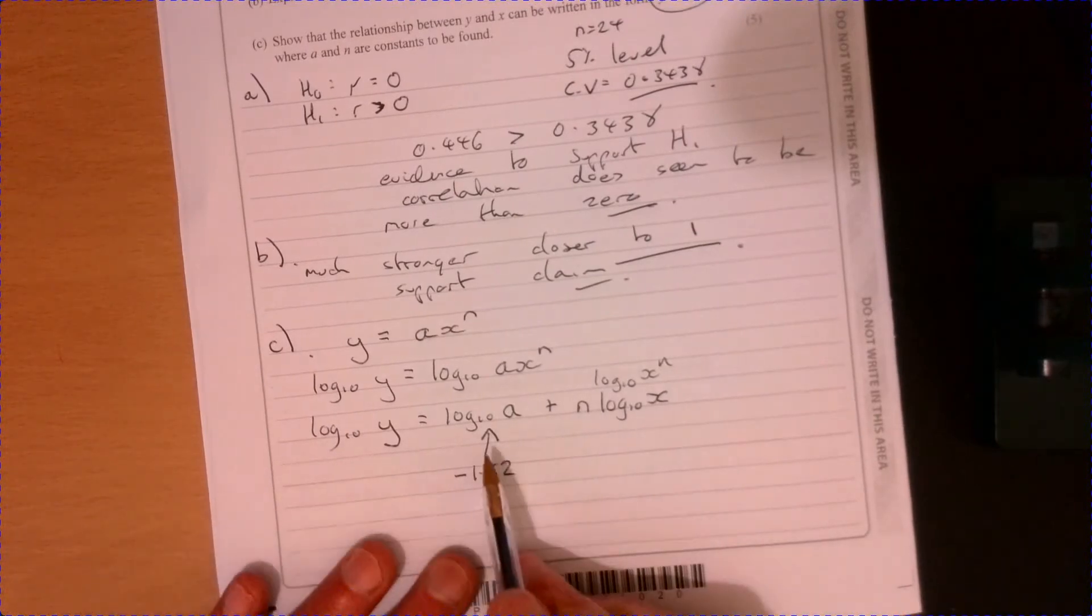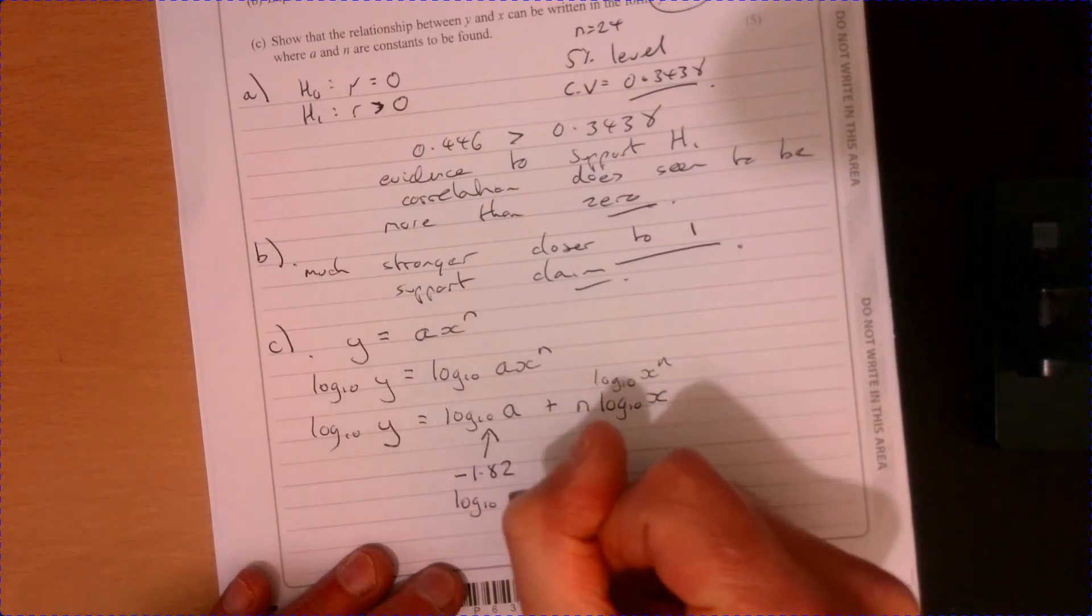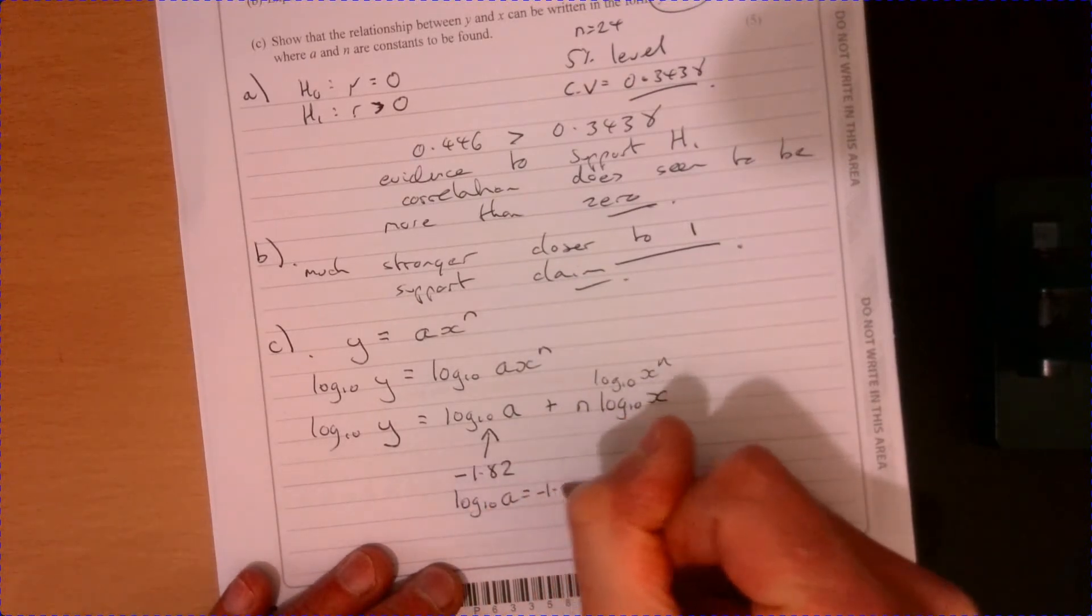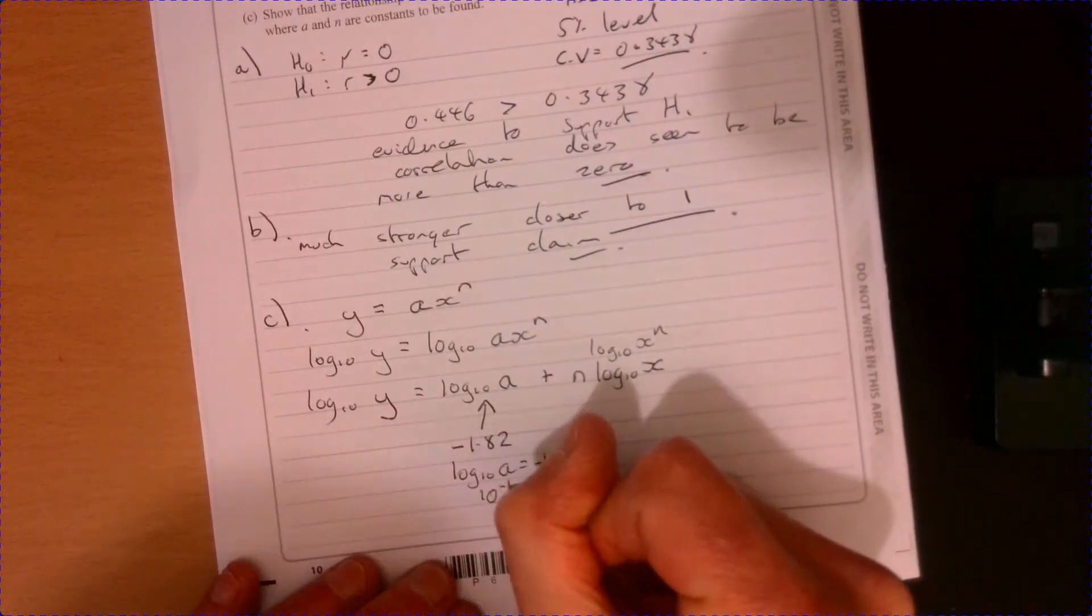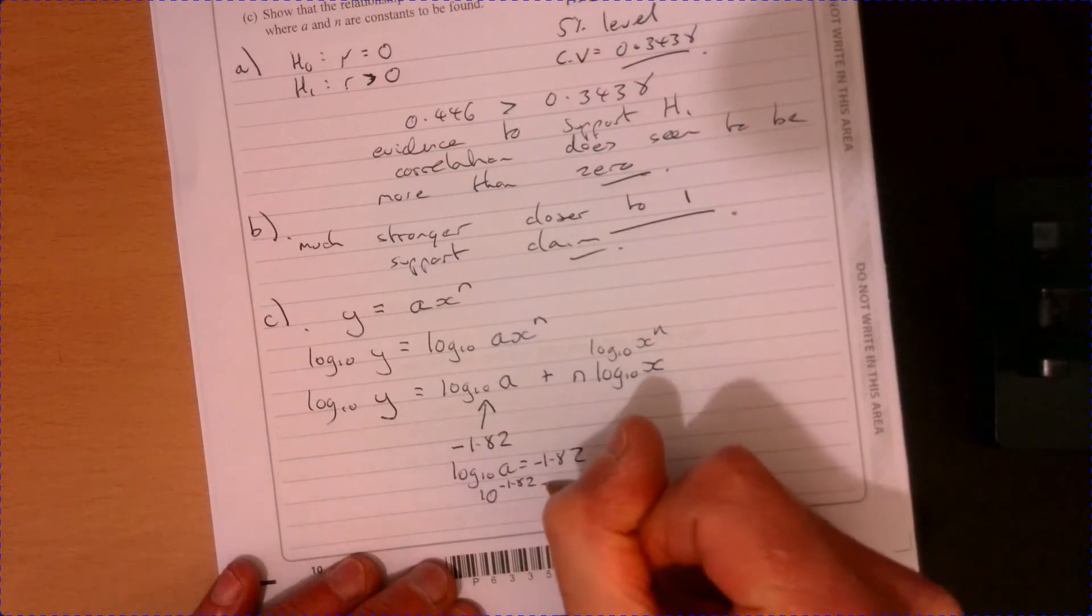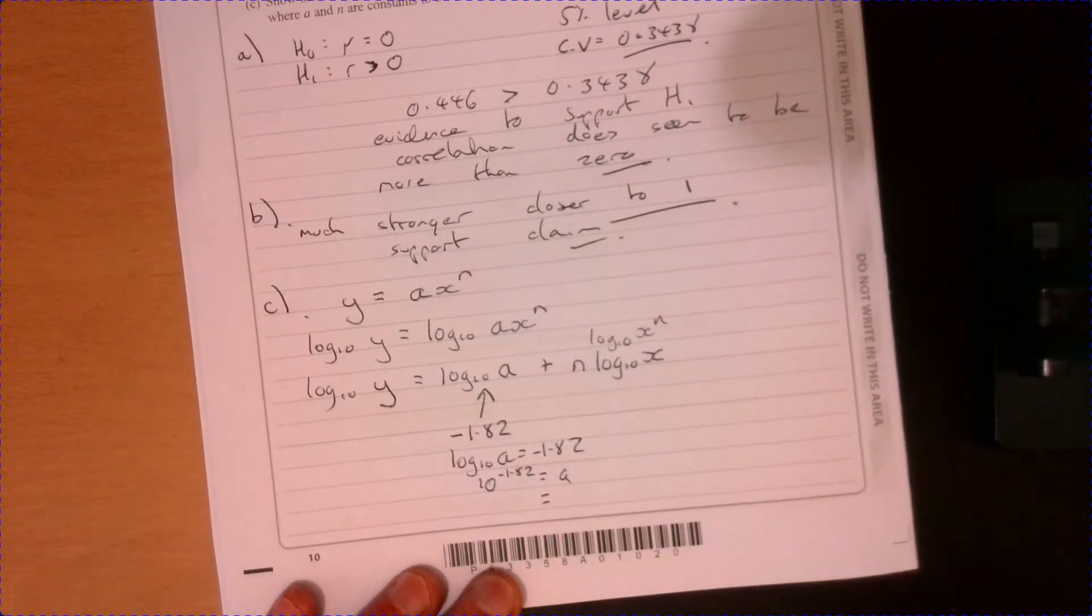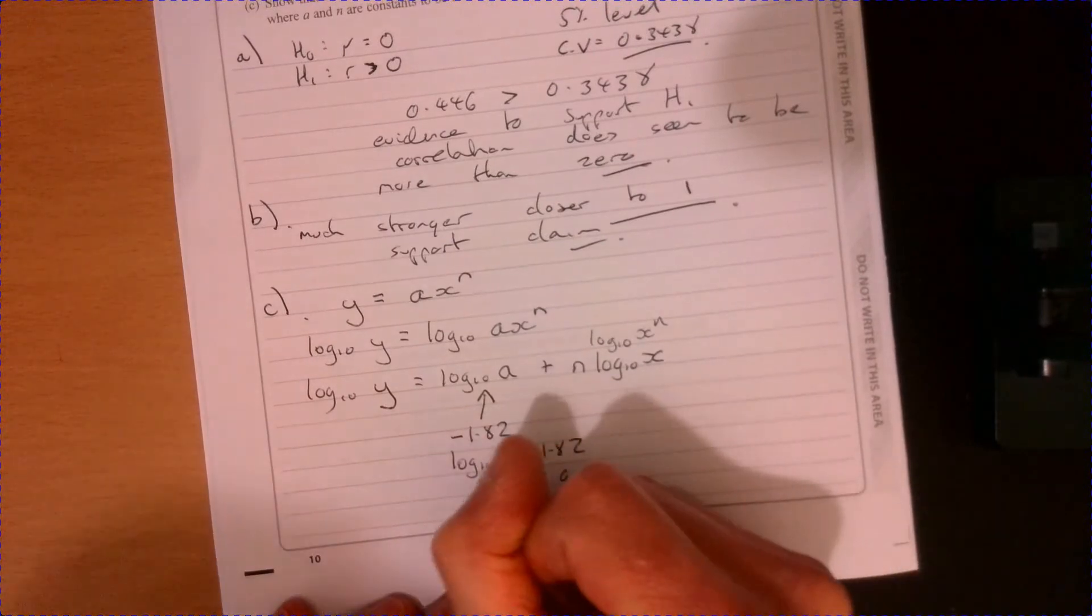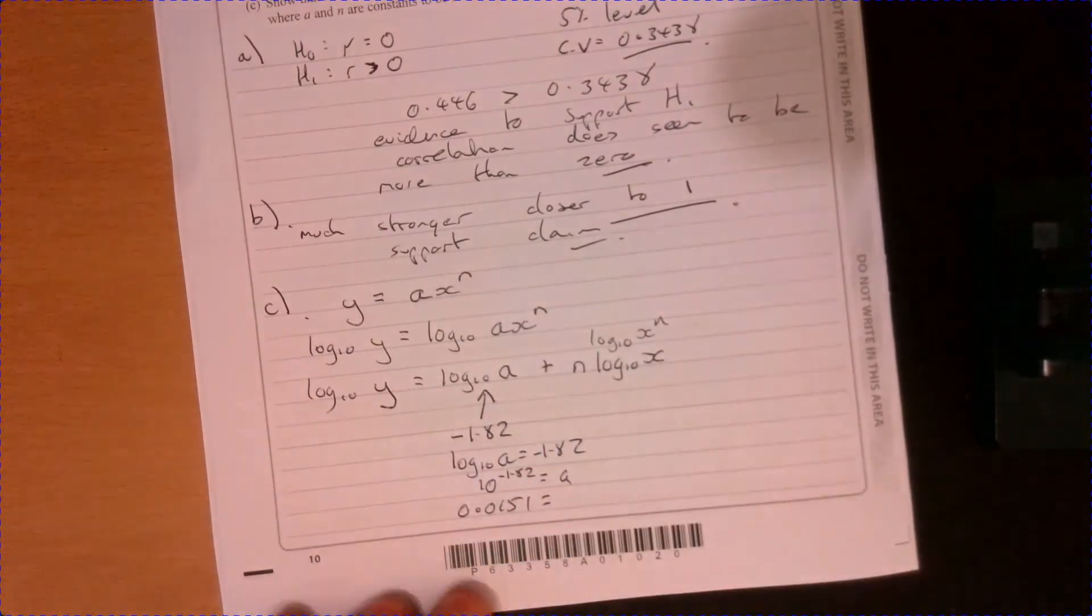So that's going to be equal to minus one point eight two. So from there, I know that log 10 A equals minus one point eight two. So if I do 10 to the power of minus one point eight two, that equals A,